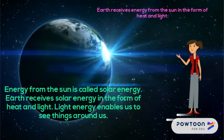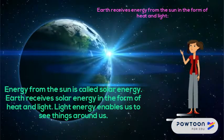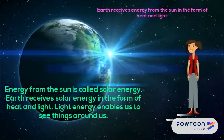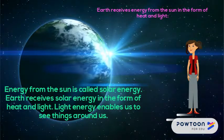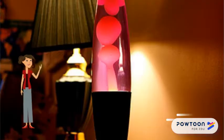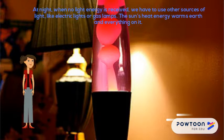Earth receives energy from the sun in the form of heat and light. Energy from the sun is called solar energy. Light energy enables us to see things around us. At night, when no light energy is received, we have to use other sources of light, like electric lights or gas lamps. The sun's heat energy warms earth and everything on it.